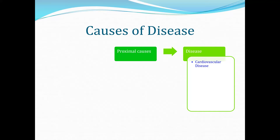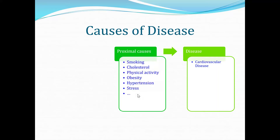Proximal causes are immediate predictors or risk factors that are direct causes of certain health conditions. For example: smoking, high or bad cholesterol, lack of physical activity, obesity, hypertension, and stress.